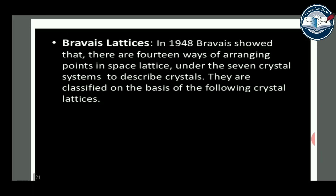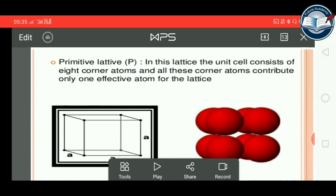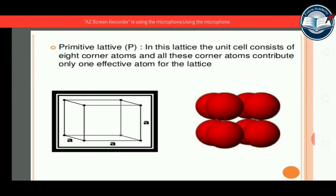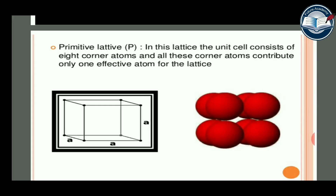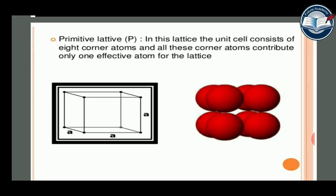In 1848, Bravais showed that there are fourteen ways of arranging points in a space lattice under the seven crystal systems to describe a crystal. They are classified based on the type of crystal lattice. In the primitive lattice, the unit cell consists of eight corner atoms, and all these corner atoms contribute only one effective atom to the lattice.